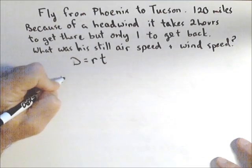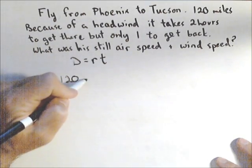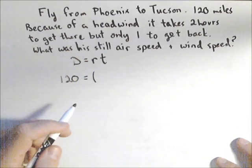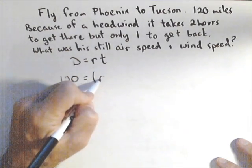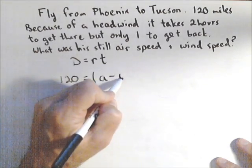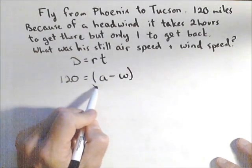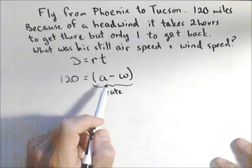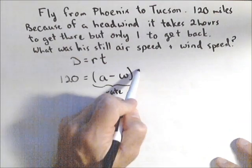So going out, he flew 120 miles, and now the rate has two components. There's his airspeed, which we'll call A, and then he's going against the wind, so we're going to subtract off his wind speed. So this is basically his rate. And it took two hours.